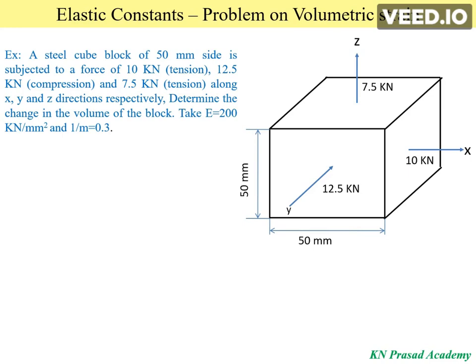A steel cube block of 50 mm side is subjected to a force of 10 kN in tension, 12.5 kN in compression, and 7.5 kN in tension along the x, y, and z directions respectively. Determine the change in volume of the block. Young's modulus is 200 kN per mm² and Poisson's ratio is 0.3.